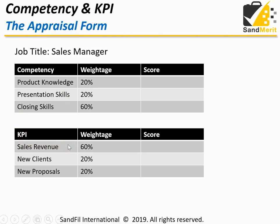For the KPI, you have sales revenue, new clients, and proposal. The key driver is sales revenue — the weightage here is 60%, because that is the main KPI for the sales manager. New clients and proposal are leading and lagging KPIs — I'll talk about that in another video. The key point here is to understand the difference between competency and KPI, and how you should design your form and assign weightage according to their importance.